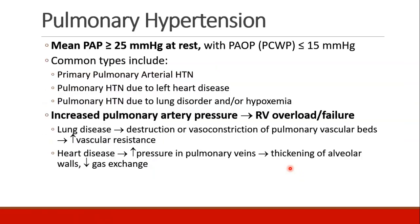Pulmonary hypertension is a condition where the mean pulmonary artery pressure is greater than 25 millimeters of mercury at rest, and the pulmonary artery occlusion pressure — the pulmonary capillary wedge pressure — is less than 15 millimeters of mercury. This indicates there is no back pressure from the left side of the heart, and that this is an actual problem in the pulmonary vasculature itself.